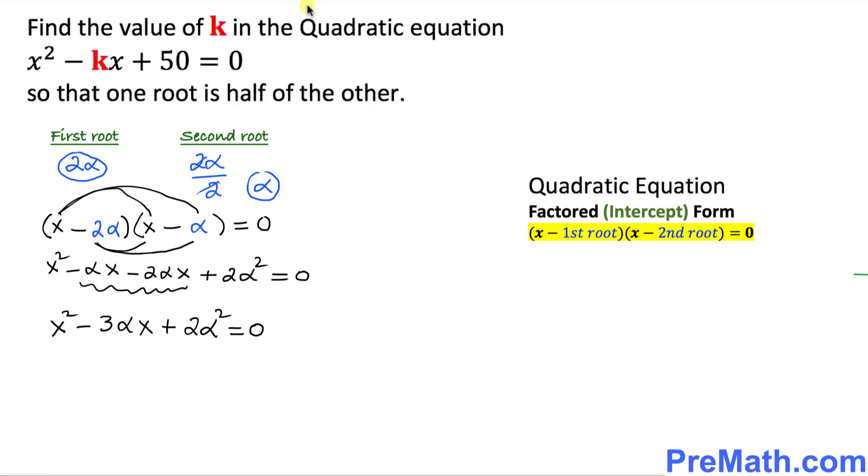Now, our next step is this one. I want you to look at this very first equation, the given one. I'm going to call it equation number 1, and this is equation number 2. We're going to compare these two equations. From equations 1 and 2, I can write x squared minus kx plus 50 equals to x squared minus 3 alpha x plus 2 alpha squared.